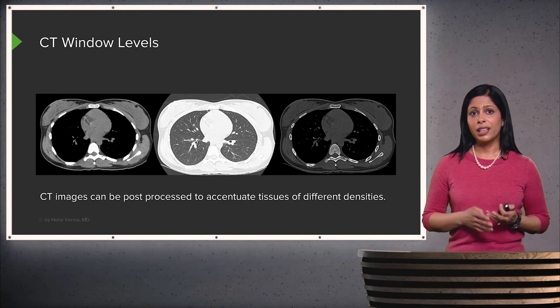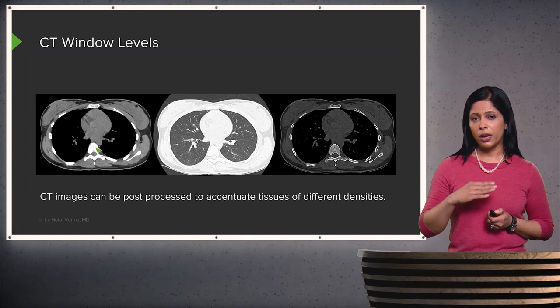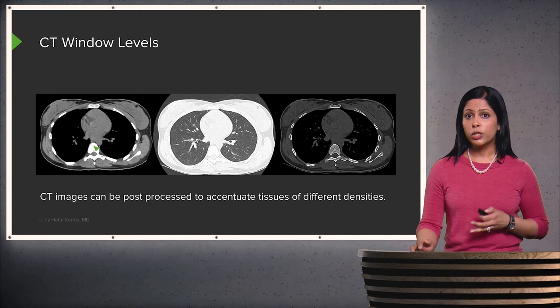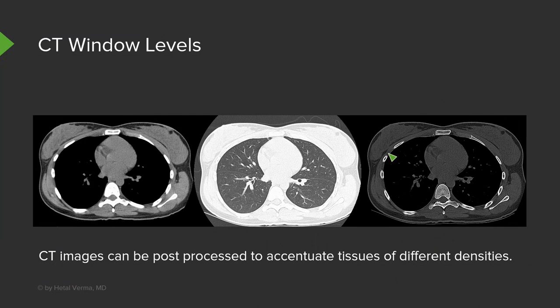CT scans can be evaluated using multiple different window levels. CT scans are obtained in just one projection — a single axial slice cut through the body — but post-processing allows you to evaluate in multiple other window levels. This is called a lung window because you can see the lungs very well, and this one is called a bone window because you can see the bones very well. This involves no additional radiation to the patient.